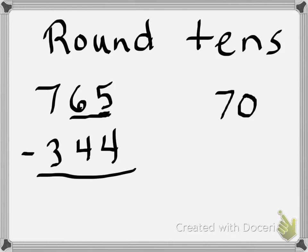But that's not 65, that's 765. So I'm going to round it to 770. Now take a look at 344. To the nearest ten, what would you round it to? Think of it as 44.